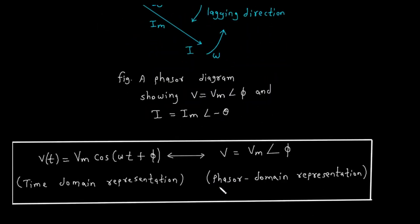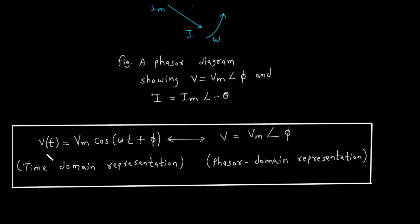This brings us to the most important summary, which connects everything discussed. We have two ways of looking at the same electrical quantity. The time domain representation, v(t) equals v sub m times cosine of (omega t plus phi), tells you the exact voltage value at any instant in time and describes the full continuous waveform. The phasor domain representation, v equals v sub m at angle phi, is a simpler static representation capturing the two most important characteristics: the peak magnitude v sub m and the phase angle phi. By converting from the time domain to the phasor domain, complex calculus problems involving sinusoids become simple algebra problems with complex numbers. This transformation is a fundamental and powerful tool used in all AC circuit analysis.